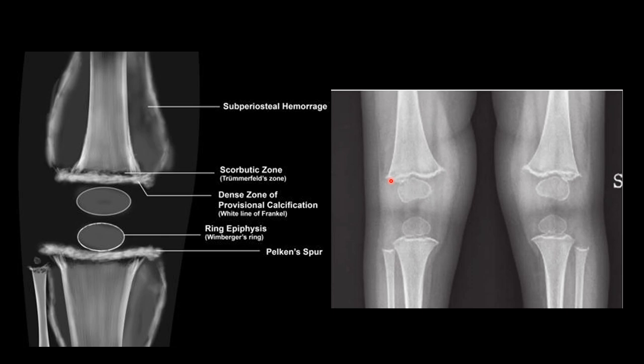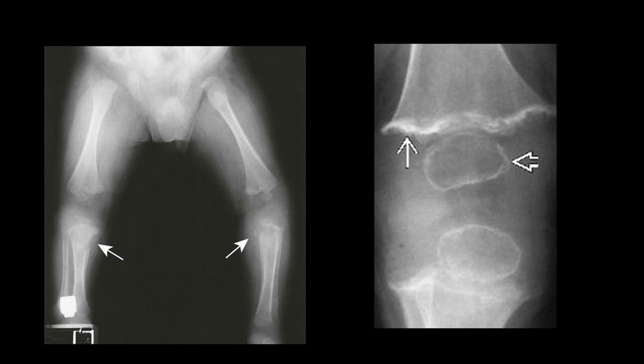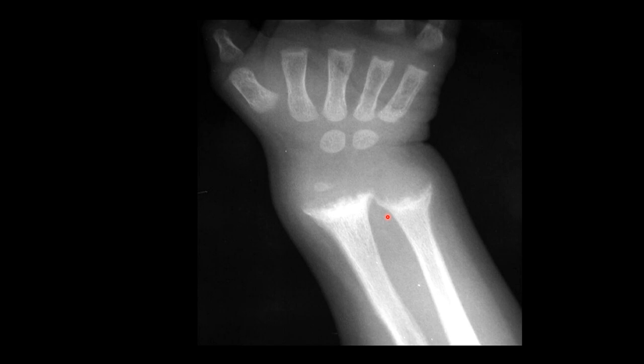If we see this on a radiograph: number one is the white line of Frankel, then the lucent zone which is the Trümmerfeld zone, this is the Wimberger's ring — the white line surrounding the epiphysis — and this is the pencil-thin cortex. In another image of scurvy, we can see the white line of Frankel, the Wimberger's ring, and the pelican spur.